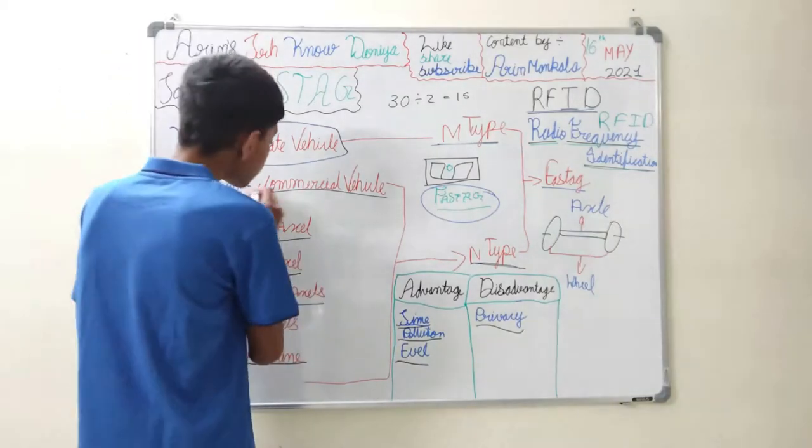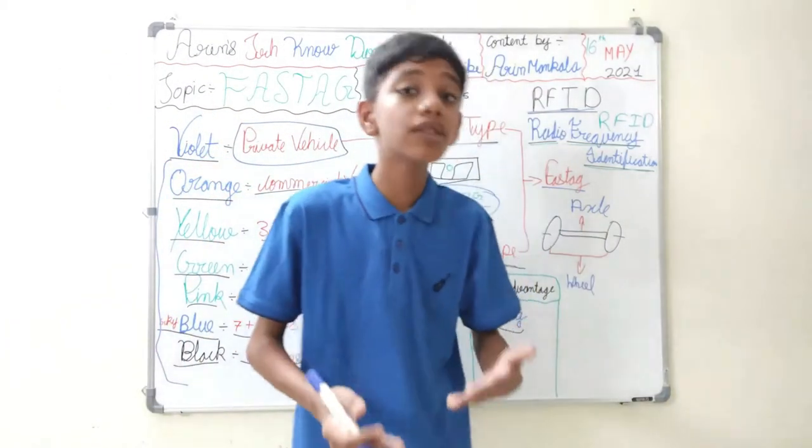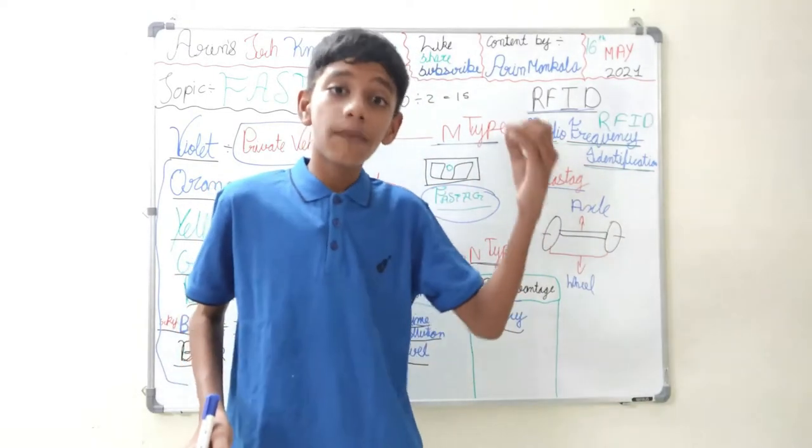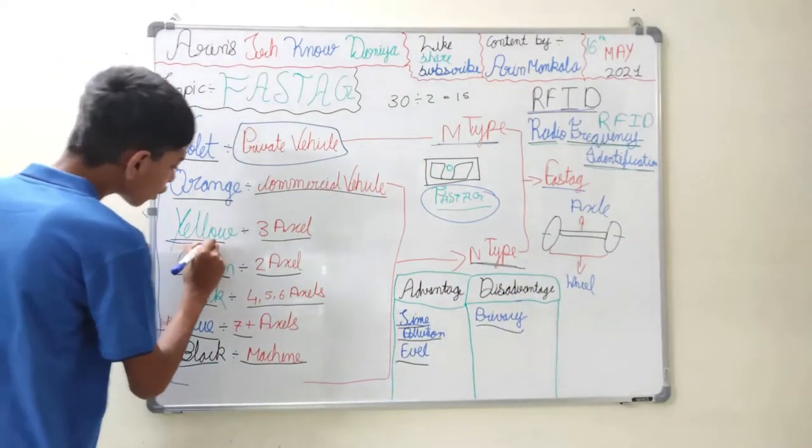First is the orange color. Orange color is used for commercial vehicles. So commercial vehicles are the vehicles which we use on rent or they are the cabs, the small trucks. So they are all the commercial vehicles.